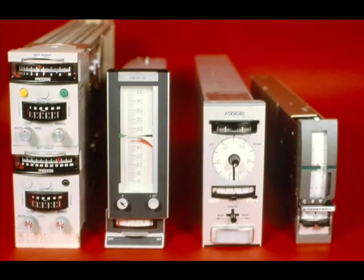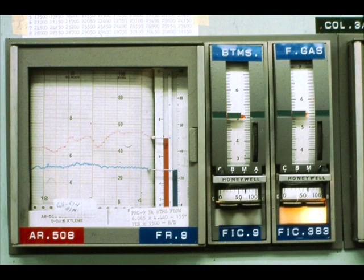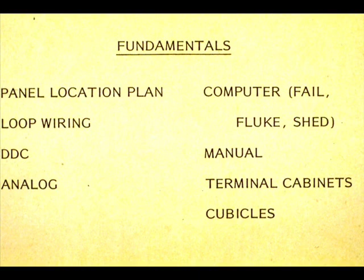Wiring in the control center may vary some for other specific instruments. For example, the computer update signal may be individually connected to each control station, instead of one signal being available for all stations. However, the fundamentals we have discussed are applicable to most installations.